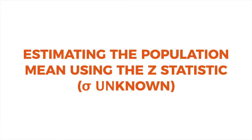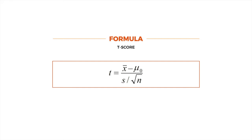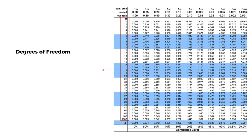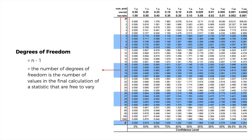Now let's look at estimating the population mean using the Z-statistic with the population standard deviation unknown. The T-distribution is used instead of the Z-distribution for inferential statistics when the population standard deviation is unknown and the population is normally distributed. The T-score formula is: T equals X-bar minus the population mean, over S divided by the square root of N. The degrees of freedom is N minus 1, which refers to the number of values free to vary in the final calculation.